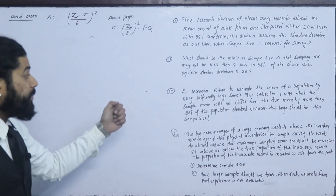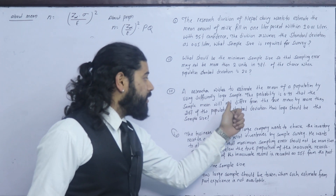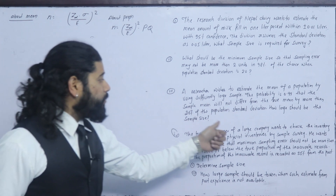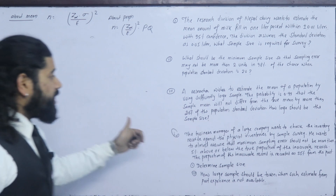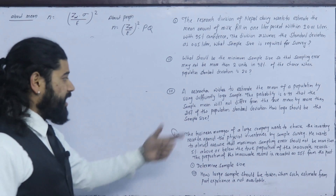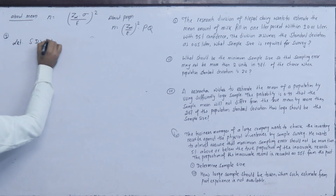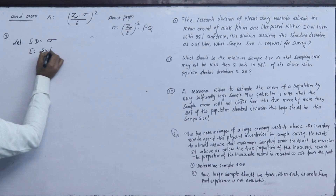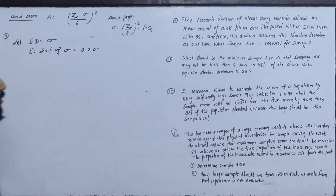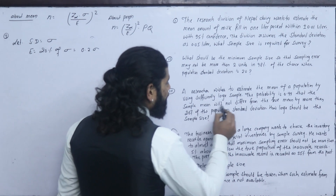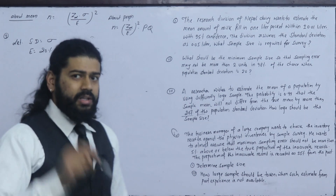Question 3: A researcher wishes to estimate the mean of a population such that the sample mean will not differ from the true mean by more than 20% of the population standard deviation. So e = 0.2 × σ, meaning the error is 20% of the standard deviation.